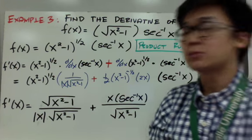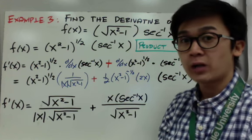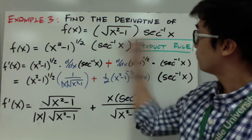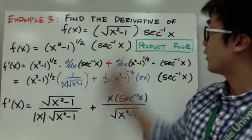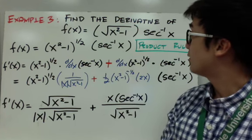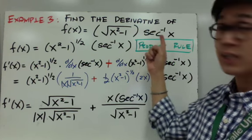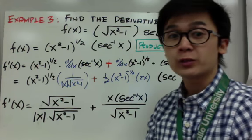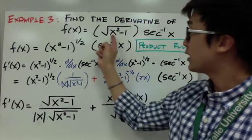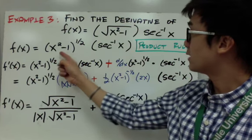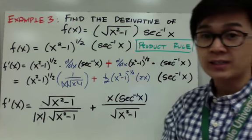The third example is a little more complicated compared to the other two, because now we're using the product rule. We're finding the derivative of two functions, f of x and g of x. Since we're working with secant inverse x, we'll also use the formula for the derivative of the inverse trig function. I changed the radical function into an exponential function, so f of x equals x squared minus 1 raised to one half, times secant inverse x.